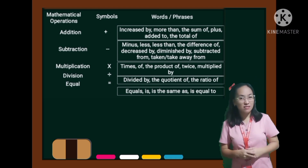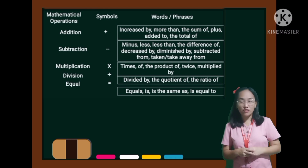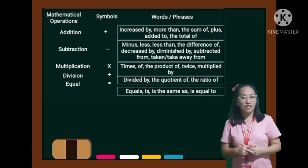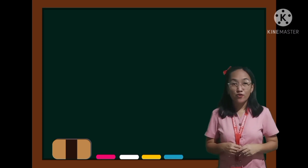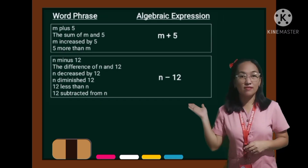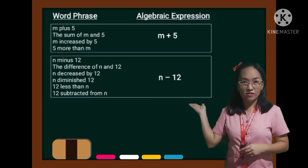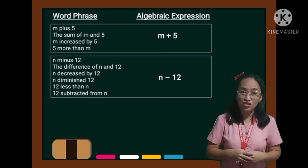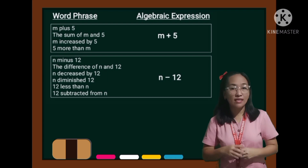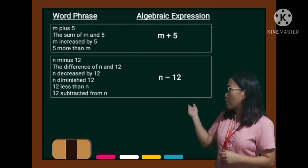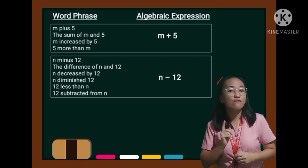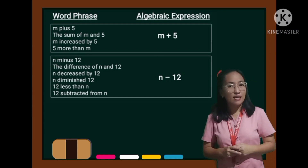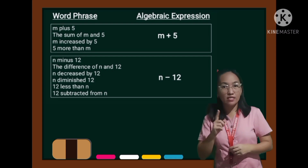My dear parents, after giving them the words related with operations, you may proceed in giving examples. In example 1, we have used different words related to addition, having one translation expression. In example 2, we have used different words related to subtraction and still coming up with one expression.